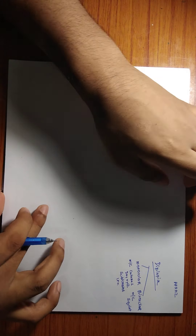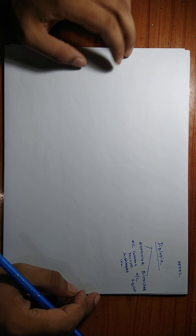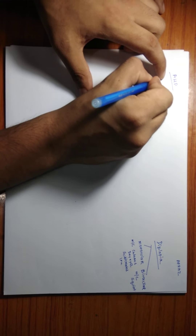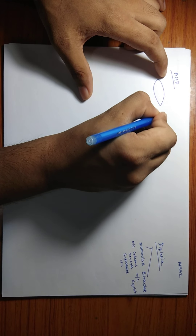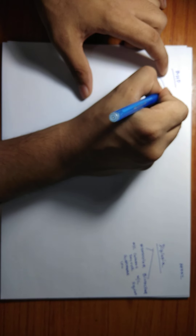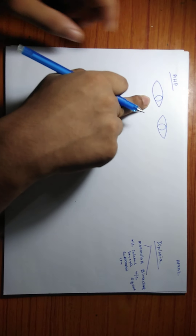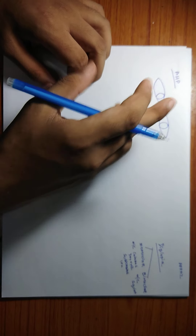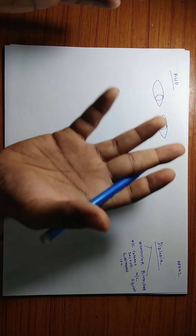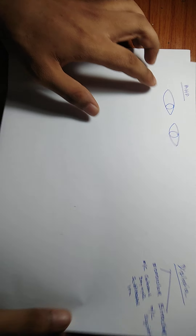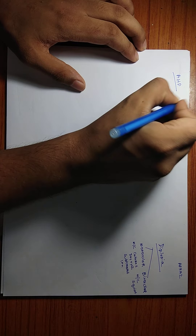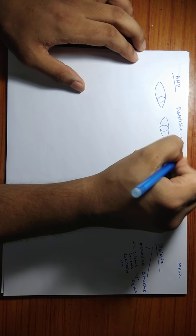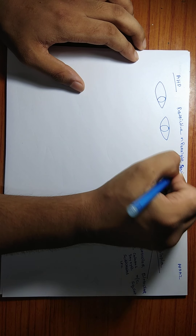Now let us understand abnormal head posture — I'll write it in short as AHP. Imagine the right eye has esotropia, that is, it is turned inward. What the body will try to compensate is the face will turn towards the right. As the body turns to the right, this kind of movement will bring the eye to center. Abnormal head posture is seen in restrictive and paralytic squint.